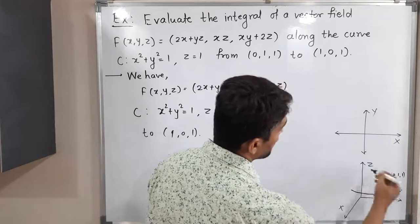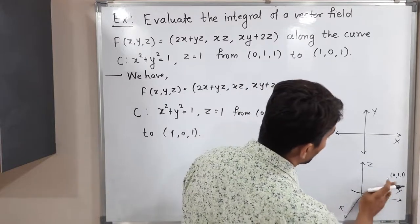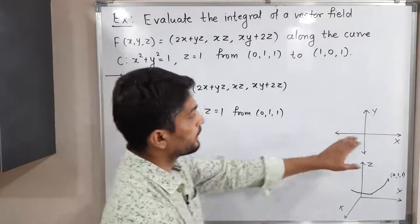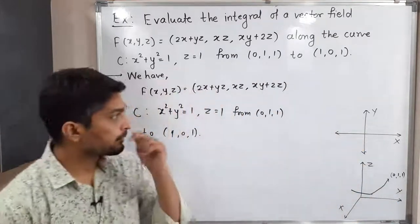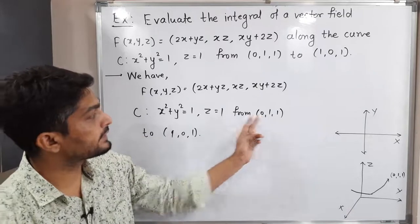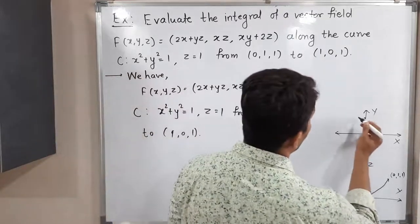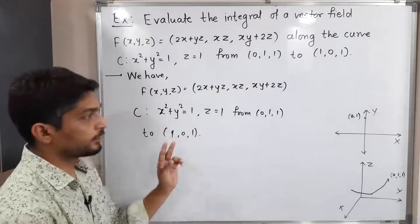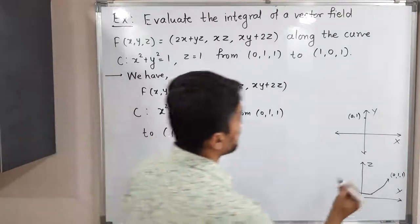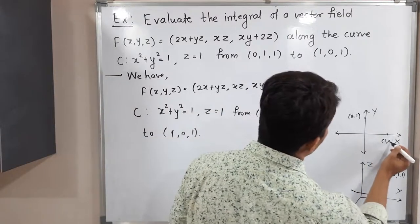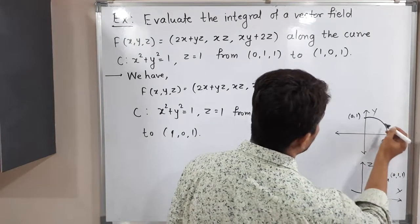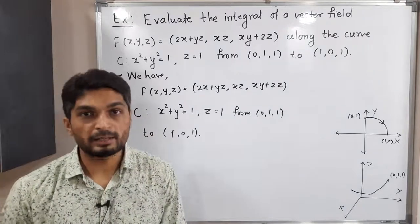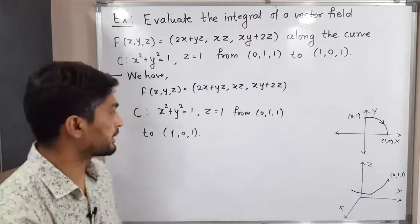As you can see, we have a circle, but we have only some part of a circle here, which goes from that point to this point. Let me show it in the xy-plane. In the xy-plane we will have the point (0,1) and the point (1,0). So we have a part of a circle like this. Now what we have to do is find its parameterization.